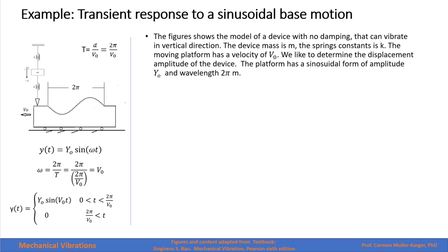In this example we have a device composed of a mass m and two springs of constant 2k. The system has no damping.